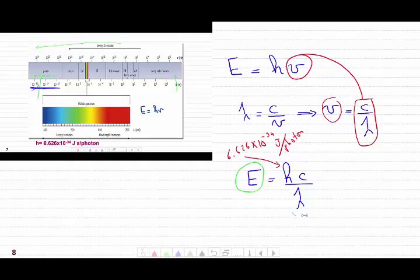The energy and the wavelength are inversely proportional. So the radiation with the longest wavelength is going to have the lowest energy.